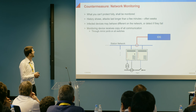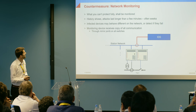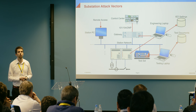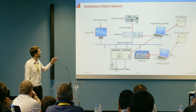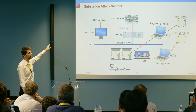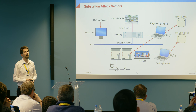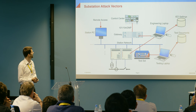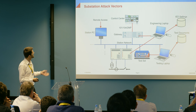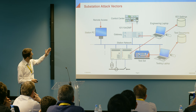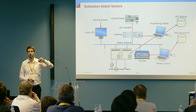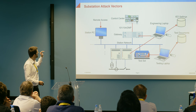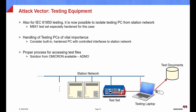The monitoring device — the intrusion detection system — receives a copy of all communication via mirror ports in the switches, allowing deep analysis of network communication. For open protocols like IEC 61850, you can look deeply inside to verify correctness. Now, let's go back to the attack vectors and look at the important boundary devices, which are the first line of defense behind the firewall — these red lines show all the ways the substation firewall can be circumvented.